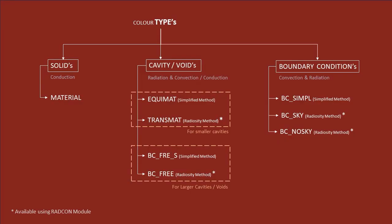Hence, to summarize, for all solid materials, conduction is the primary mode of heat transfer. We choose the type as material. For cavities where convective and radiative heat transfer is possible, we choose type EQUIMAT to consider simplified radiation and choose type as TRANSMAT to perform detailed infrared radiosity analysis.